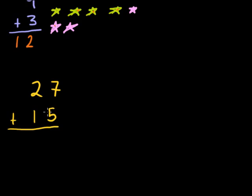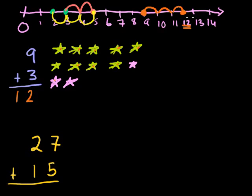Now, if you had a lot of time on your hands, you could draw out 27 circles and then draw out another 15 circles and count the total number of circles you had. Or you could draw a number line that went all the way to whatever 27 plus 15 is. But that would take you forever.